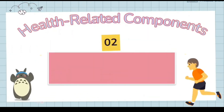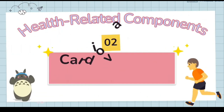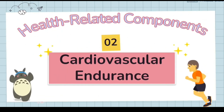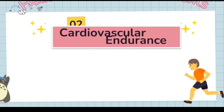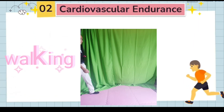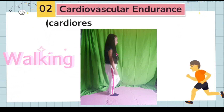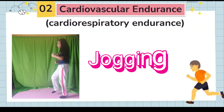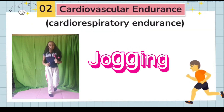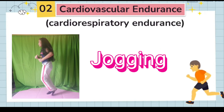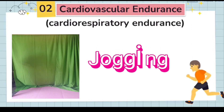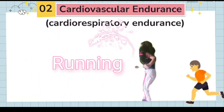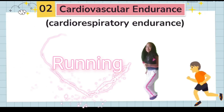2. Cardiovascular endurance, also known as cardiorespiratory endurance. It is the ability of the heart and circulatory system to supply oxygen to muscles for an extended period of time.